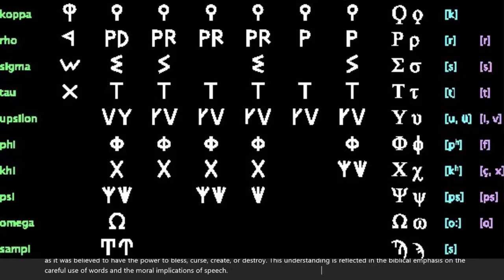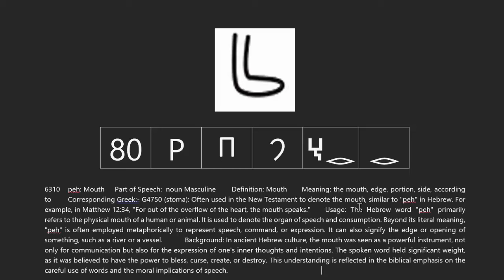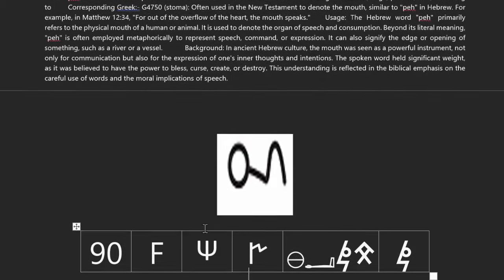The next letter to talk about is the Peha, with the sounds Pa and Ha. The definition of it is mouth. The meaning is the mouth, edge, portion, side, or 'according to.' It primarily refers to the physical mouth of a human or animal, used to denote the organ of speech or consumption. Not only was it speech, but an expression of one's inner thoughts or intentions. These biblical definitions give us way more out of these letters than what we were told.